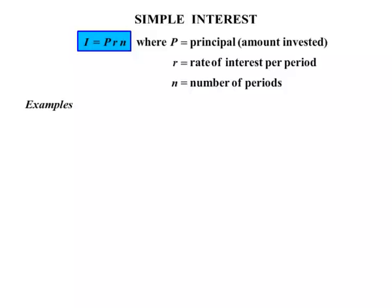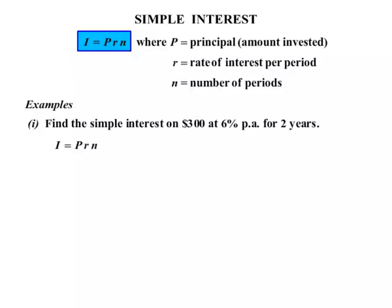Let's look at some examples. The first one: find the simple interest on $300 at 6% per annum for 2 years. Now I start with the formula firstly, I equals PRN. Now the $300, that's our principal, so P equals $300.